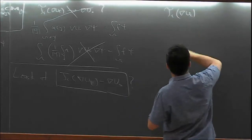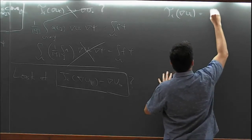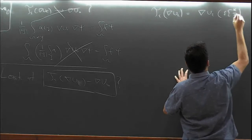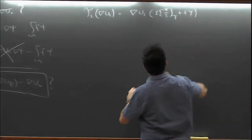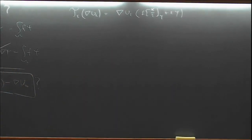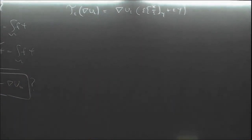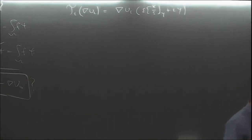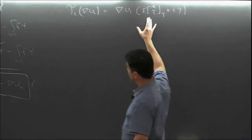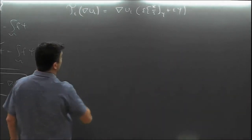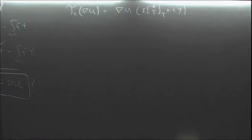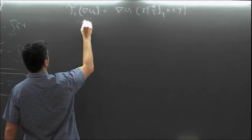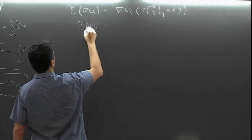By definition, T_ε(∇u_ε) is the gradient of u_ε evaluated at the right argument — wherever it's not zero. There is a key relation, easy to see by change of variables: if you look at the definition of T_ε(u_ε) and differentiate with respect to y, by the chain rule you get an ε times the gradient of u_ε evaluated in the argument.